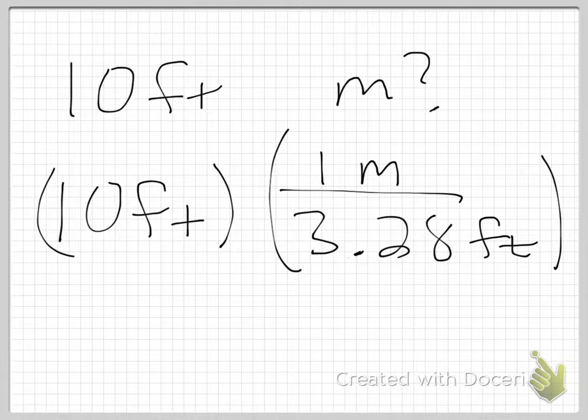And the same thing is going to happen. I can do the mathematical portion pretty easily. 10 divided by 3.28 is equal to about 3.05. Again, I'm doing some rounding. And then my feet are going to cancel, and I'm left with meters. So the answer is 10 feet is equal to 3.05 meters.